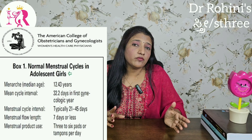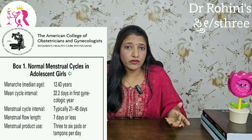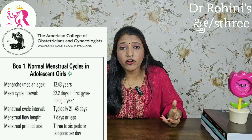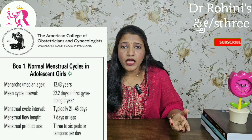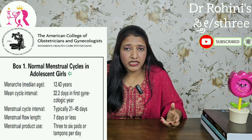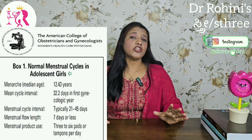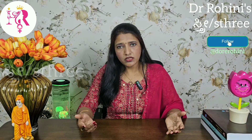In young girls, a normal menstrual cycle may range from 21 to 45 days. If your daughter gets her period once every 21 days, that is normal; once every 45 days is also normal. If she changes three to six pads a day, that is also considered normal. And if she bleeds for up to seven days, that is considered normal.